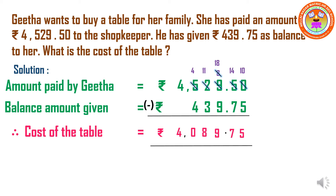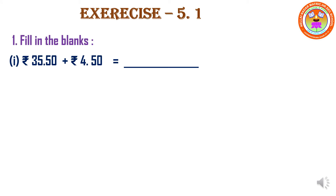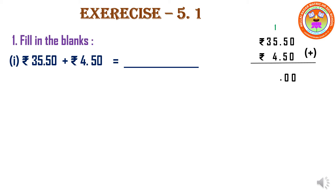So we have learnt addition and subtraction based problems. Children, now let us move on to exercise 5.1, fill in the blanks. Under the first sum: 35 rupees 50 paise plus 4 rupees 50 paise. We are going to add these two amounts. 0 plus 0 is 0, 5 plus 5 is 10, so 0 is written down and 1 above. Then 5 plus 4 is 9, and 9 plus 1 is 10, so 0 is written down and 1 above. 3 plus 1 is 4. So the answer is 40 rupees.